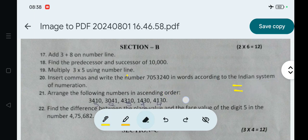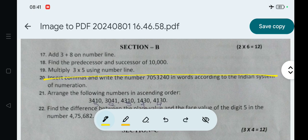Next, question number 19. Question is: Multiply 3 into 5 using number line. On the number line we'll find the value of 3 into 5. 3 into 5 means 5 is added 3 times. Then first, draw the number line. 0, 5, arrow mark, 5, arrow mark, 3, 5, arrow mark. We'll go up to 15.